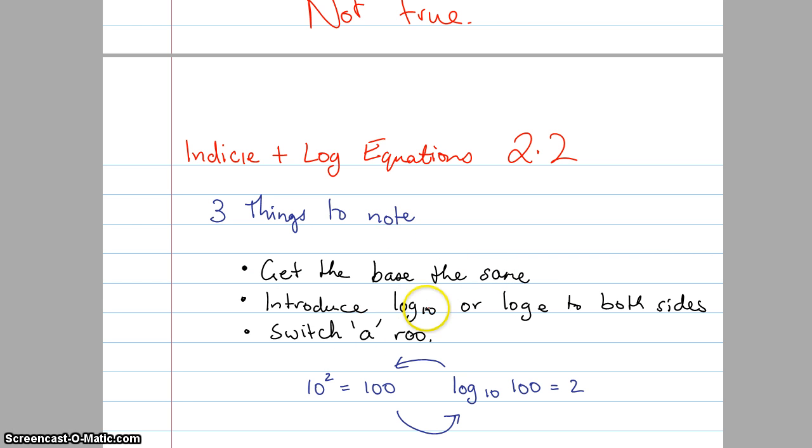Now sometimes you can introduce log 10 or log e to both sides, although that's probably not as relevant anymore because our calculator can do log to the base of anything. But sometimes log 10 and log e can work nicely. And the other last thing is the switcheroo, remembering going from 10 squared equals 100 to log 10 of 100 equals 2. Sometimes it's nicer in an indice form, sometimes it's nicer in a log form.